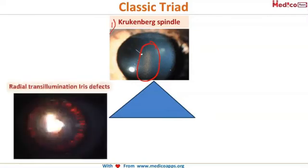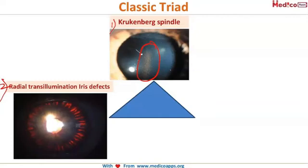The second one is radial transillumination defects. Transillumination is a technique used with the slit lamp where light goes inside the eye and reflects back from the retina, so the iris is illuminated from behind. We will see orange-colored lines indicating areas where the iris is deficient in pigment.